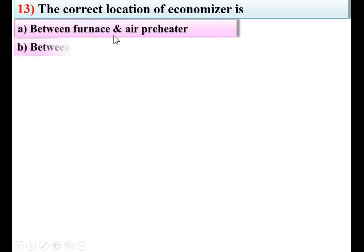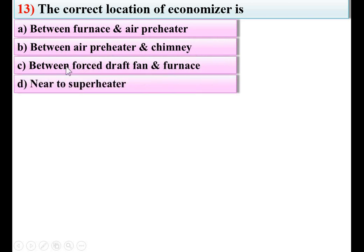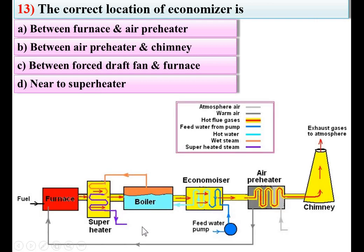The correct location of the economizer is — options: between furnace and air preheater, between air preheater and chimney, between forced draught fan and furnace, near to superheater. This is an important figure showing the location of different parts in the power plant. The economizer is located between the boiler and the air preheater, so we can say it is between the furnace and the air preheater. So A is the right answer.